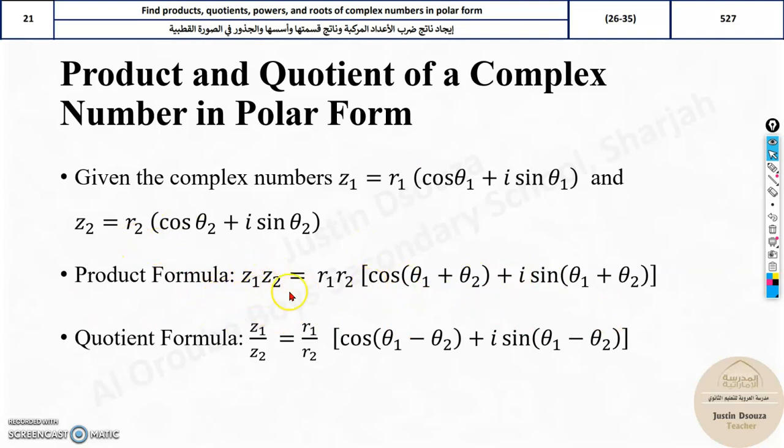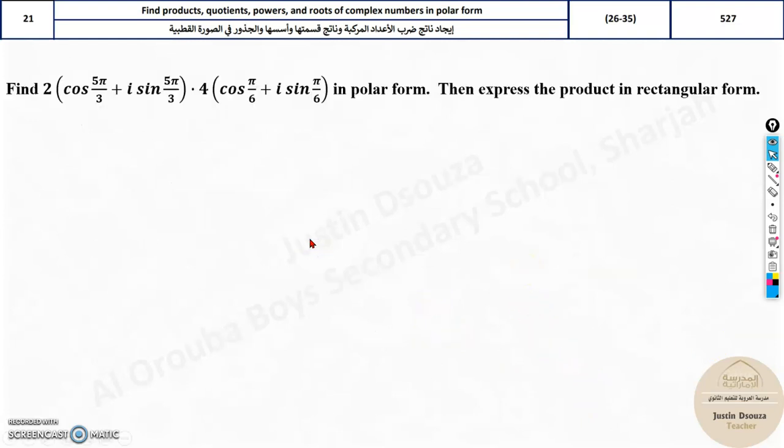So product is multiplying Z1 and Z2. It is very simple: the radii are multiplied, r1 into r2, and the theta angle is added up. So cos(θ1 + θ2) and since sine is imaginary, you must write i sin(θ1 + θ2). It is as simple as it gets, very easy to remember. What about the quotient? It's division, so r1 and r2 are divided. Only difference is the angle is subtracted. So θ1 minus θ2, same thing. That's it.